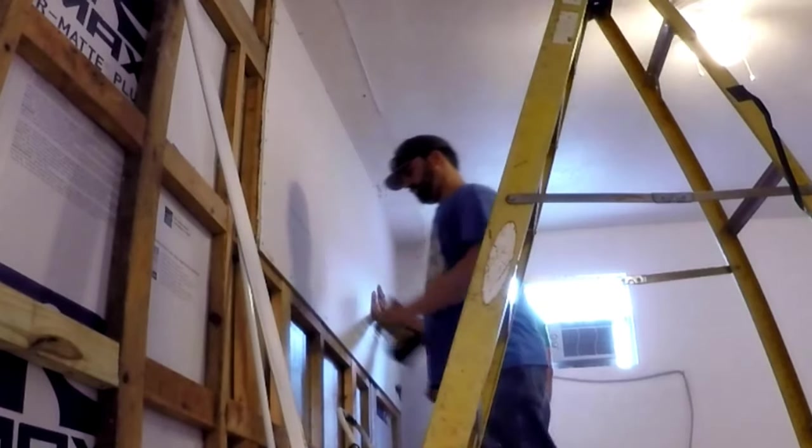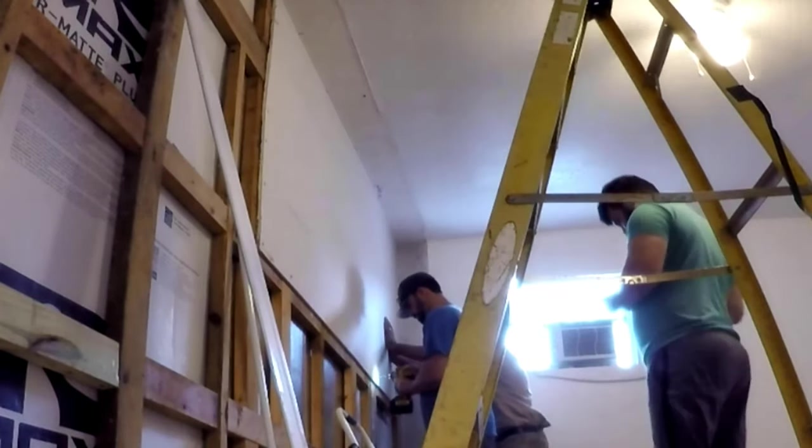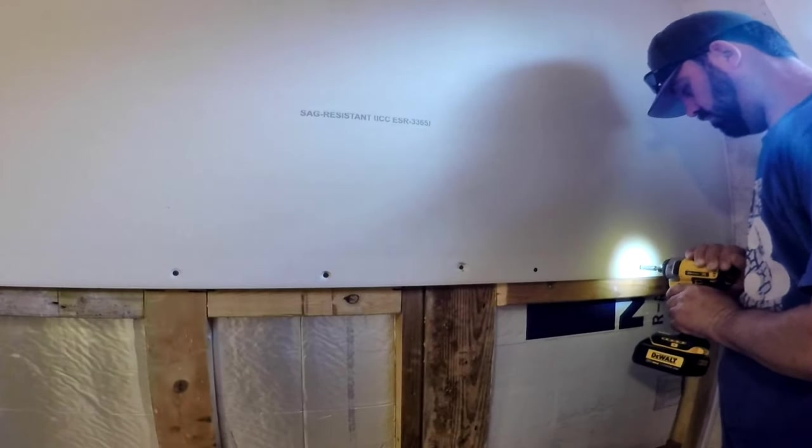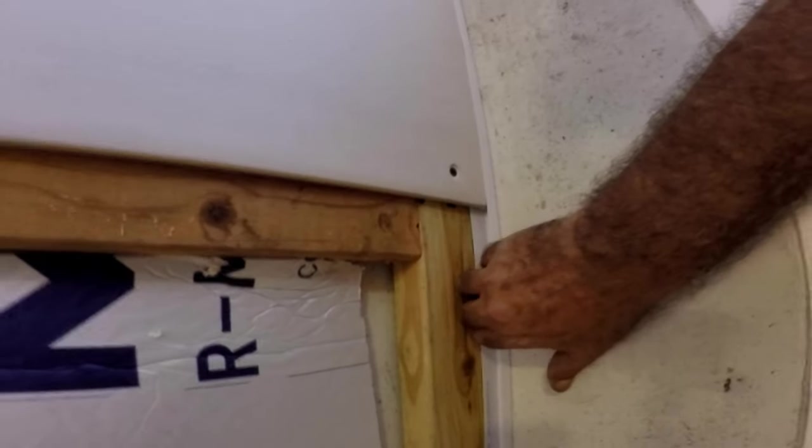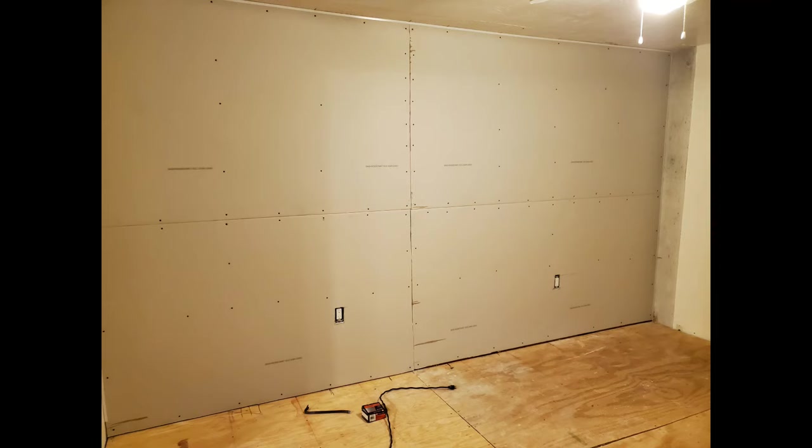Make sure the screws are countersunk into the paper so it will not interfere with compounding. The J-trim is looking good so far. As you see, it's nice and flush to the wall and ceiling. And there's the finished drywall all screwed in. The outlets are in and the trim gives it a great finish.